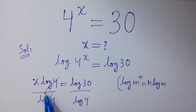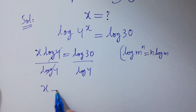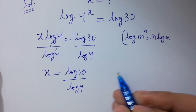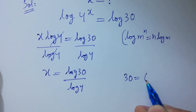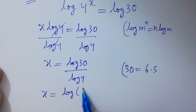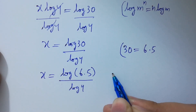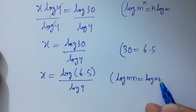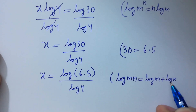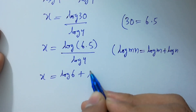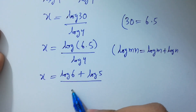Log 4 and log 4 will be cancelled. x equals log 30 over log 4. Since 30 equals 6 times 5, so x equals log(6 times 5) over log 4. Since log(mn) equals log m plus log n, so x equals (log 6 plus log 5) over log 4.